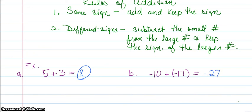You could also see this problem written a different way. Another way to write this problem would be negative 10 minus 17. Signs are the same, add and keep the sign. Those are two equally correct ways to write that problem.